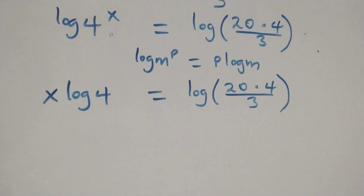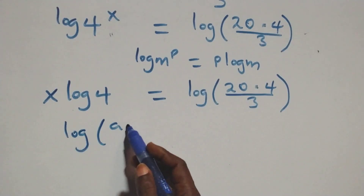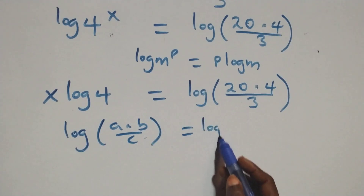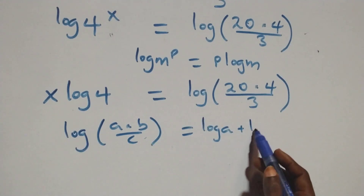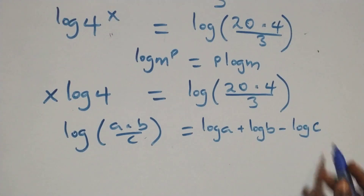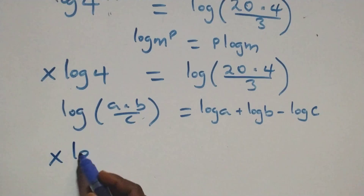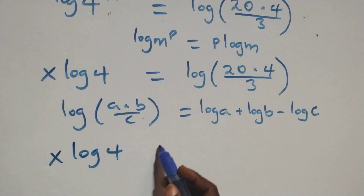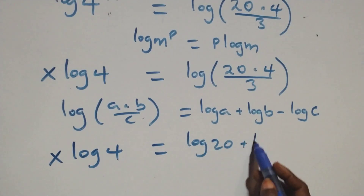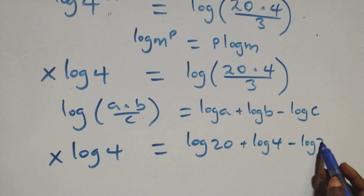And here we apply the law of logarithm. When we have log a times b over c, this is the same thing as log a plus log b minus log c. At this, here we have x log 4 equals to log 20 plus log 4 minus log 3.